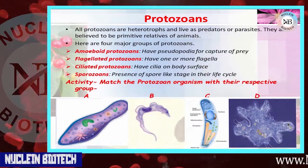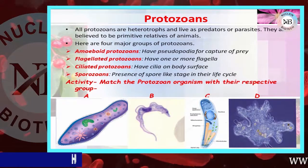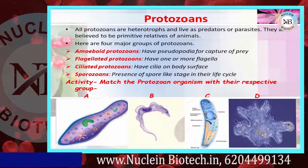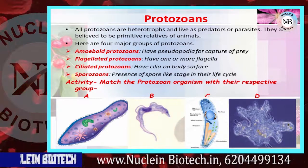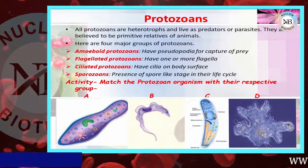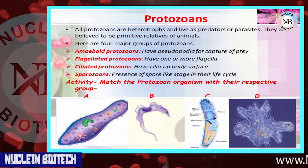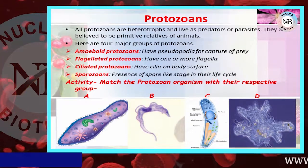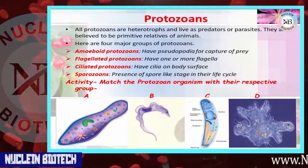Protozoans are all heterotrophs and live as predators or parasites. They are believed to be primitive relatives of animals. There are four major groups: amoeboid protozoans (using pseudopodia to capture prey), flagellated protozoans (with one or more flagella), ciliated protozoans (with cilia on body surfaces), and sporozoans (with a spore-like stage in their life cycle).